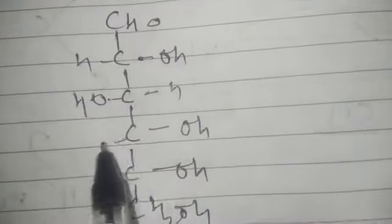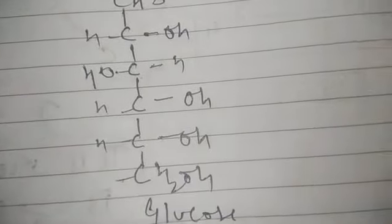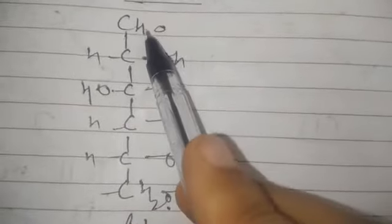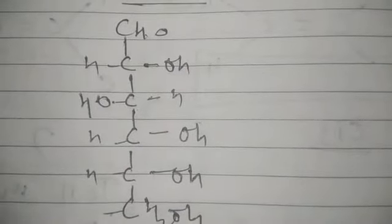Let's take the example of aldehyde — glucose. In glucose, the group present is actually a ketone group. It has many OH groups attached. C6 means 6 carbons. The second, fourth, fifth, sixth carbons have OH groups on the right-hand side, and the third carbon's OH is on the left-hand side. This is the structure of glucose — polyhydroxy with a ketone group present. This is called carbohydrate.